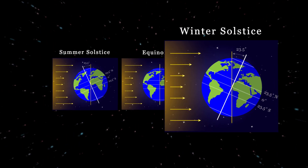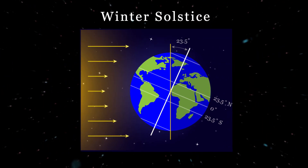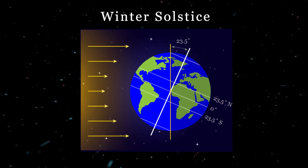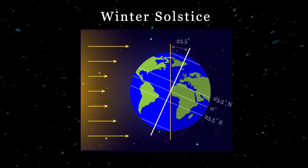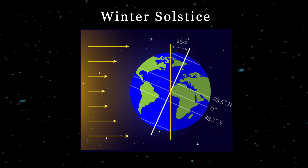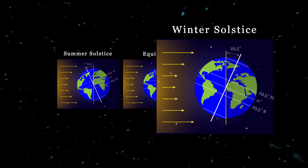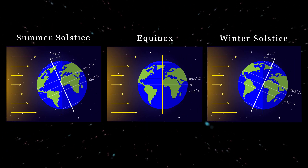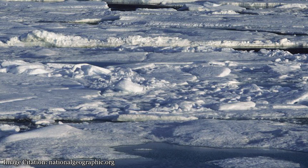Similarly, it does not set for an observer at the Antarctic Circle on the winter solstice, and at the South Pole, it does not set for six months. Another result of the tilt is that the Arctic and Antarctic regions are some of the coldest places on Earth.